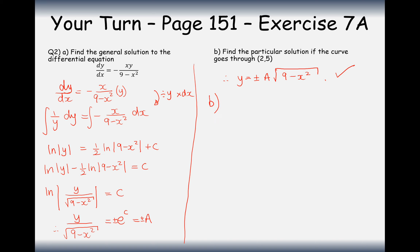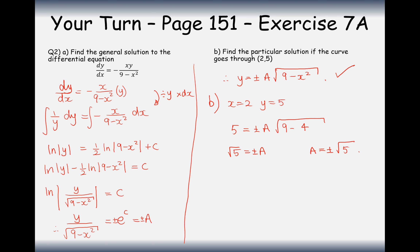Now for part B: when x equals 2, y equals 5. Find the particular solution for the curve through (2, 5). Substituting in: 5 equals plus or minus A times the square root of (9 minus 4), which is root 5. So A equals plus or minus root 5. Therefore the particular solution is y equals plus or minus the square root of (45 minus 5x squared), where the two square roots have been combined inside a single square root.